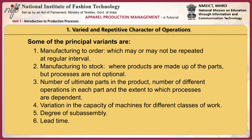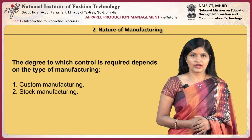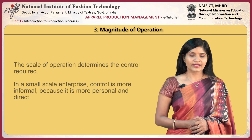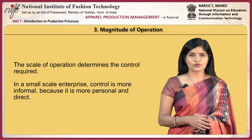The factors responsible for control include the varied and repetitive character of operations, nature of manufacturing, and magnitude of operations. Variety of operations complicates planning and control, whereas repeated operations simplify the problem. Principal variants include manufacturing to order, manufacturing to stock, number of ultimate parts, number of operations, extent to which processes are dependent, variation in machine capacity, degree of sub-assembly, and lead time. The degree of control required depends on the type of manufacturing — custom or stock. In small-scale industries, control is more informal because it is more personal and direct.